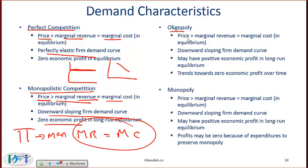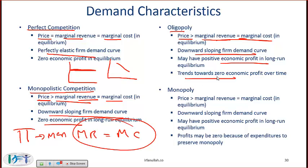With an oligopoly, price is greater than marginal revenue, but as always, for profit maximization marginal revenue equals marginal cost. The demand curve is downward sloping and the firm may have positive economic profit in the long run. With perfect competition and monopolistic competition we do not have positive economic profit in the long run. With oligopoly we can, but it would still most probably tend towards zero economic profit.